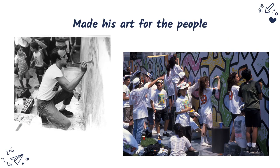He made his art for people. He wanted his artwork to be seen by everyone — he did not want it to be just for the rich and mighty. He wanted everyone to look at his artwork, understand it, and enjoy it. You can see a picture of him starting to paint a mural, and on many occasions he would get large groups of people and volunteers to paint the rest — he would do the black lines and they would fill them in.